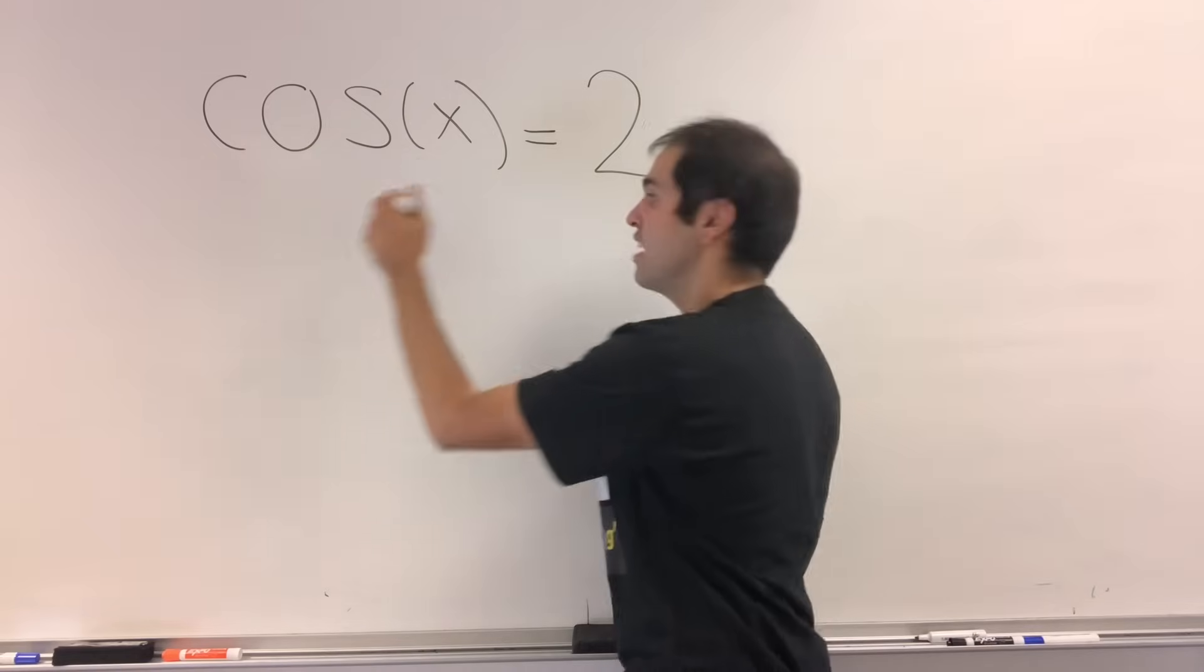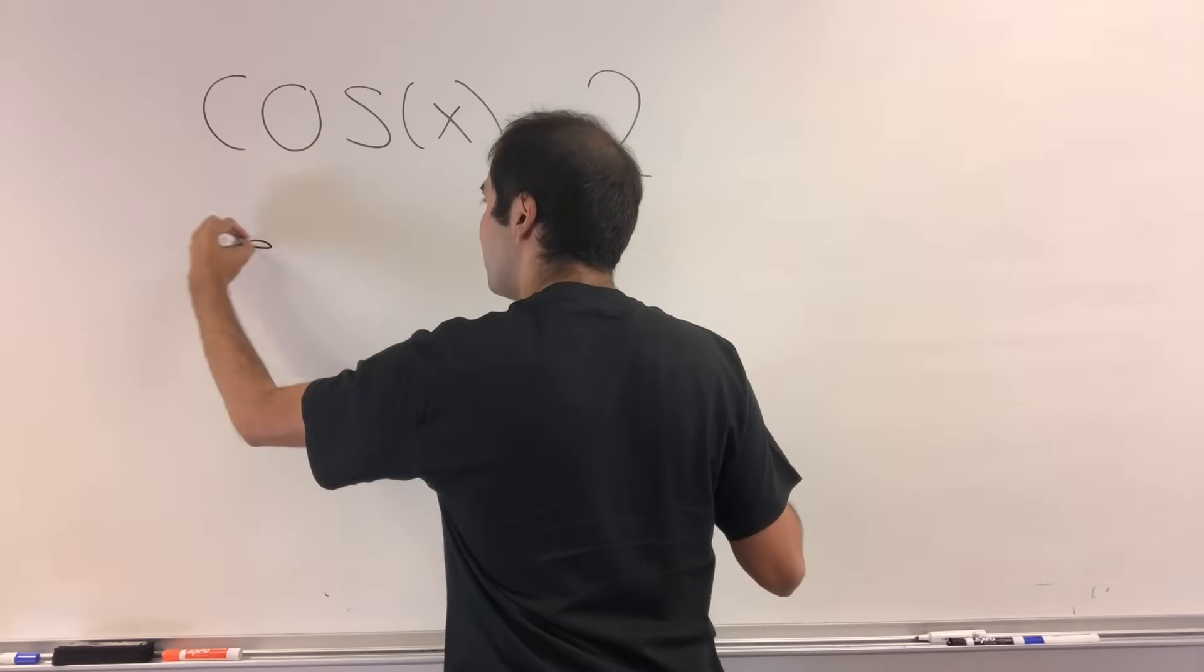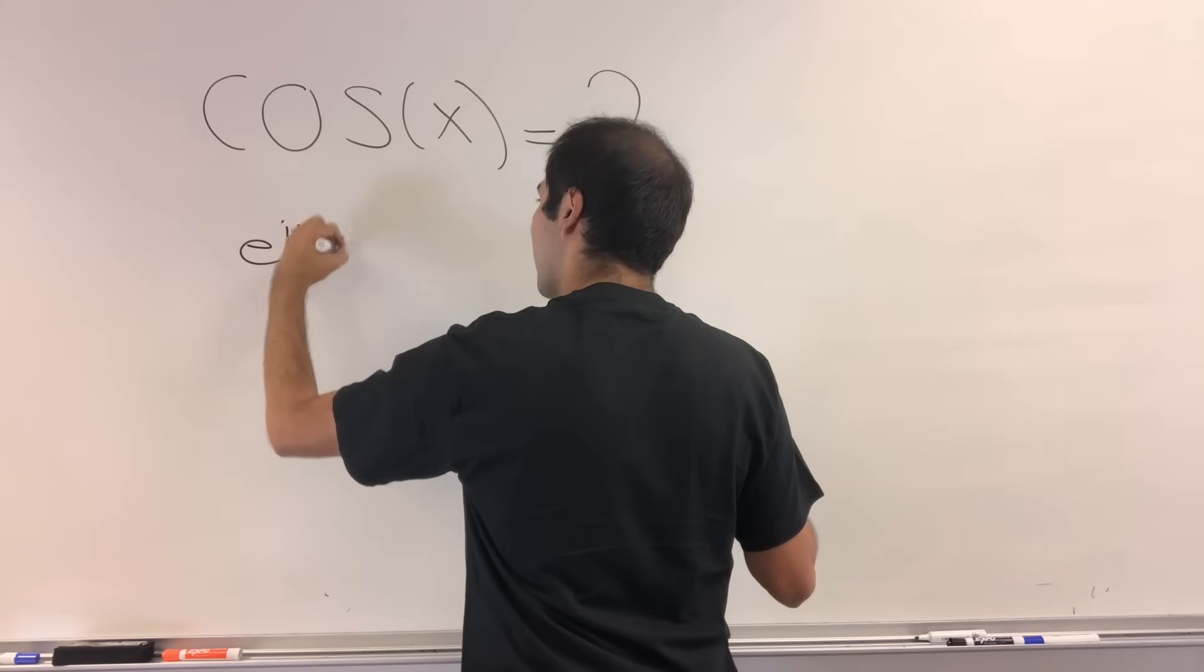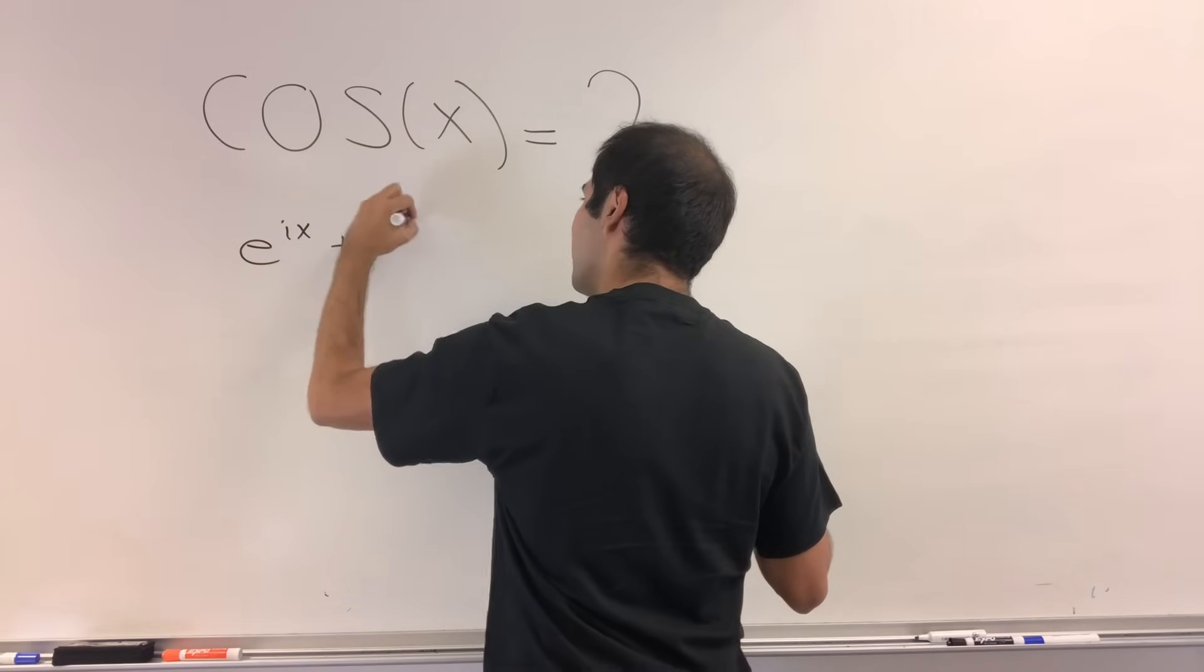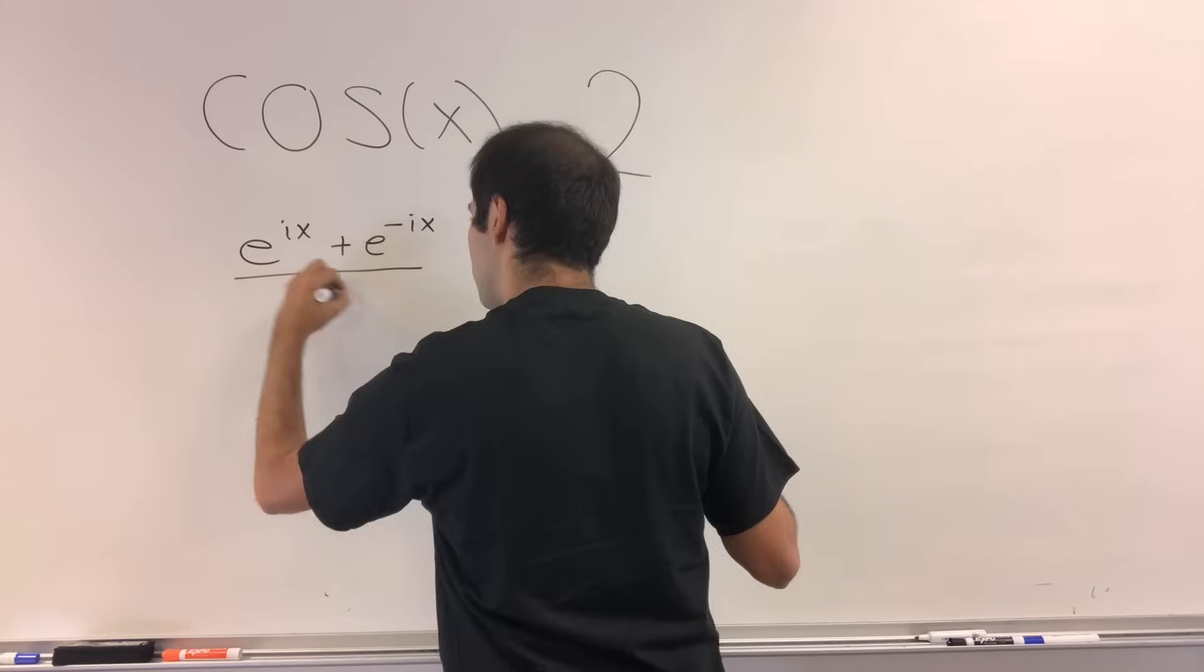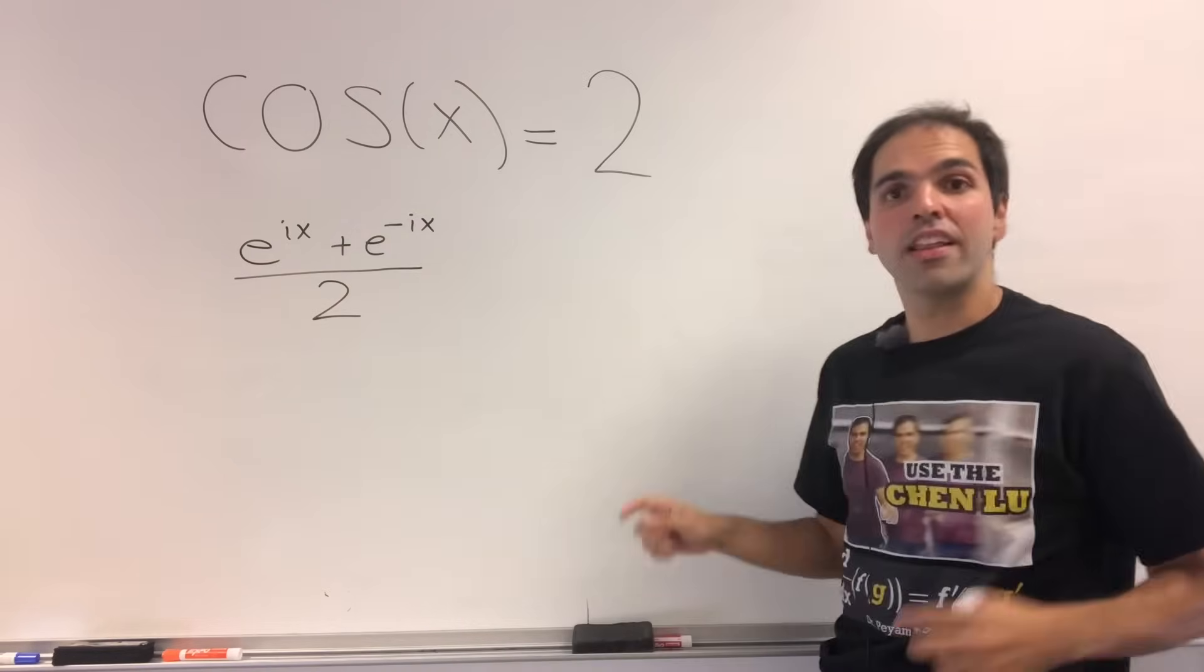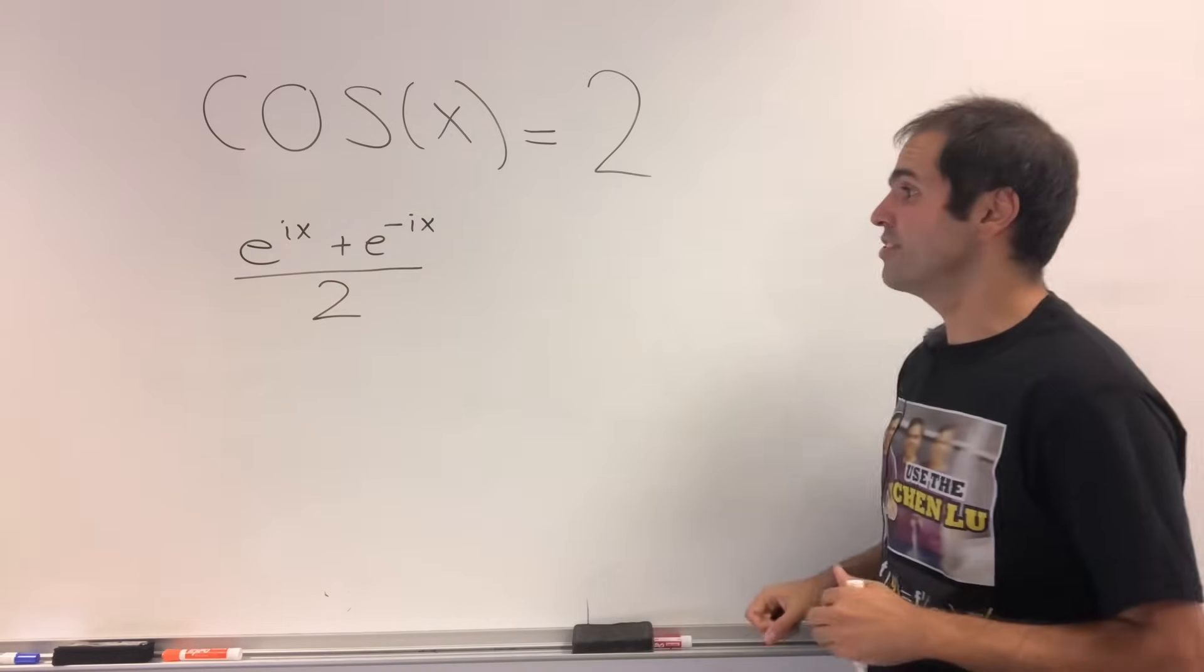Because cosine of x is just a hidden version of e to the ix plus e to the minus ix over 2. Think almost like hyperbolic cosine, quite interestingly.